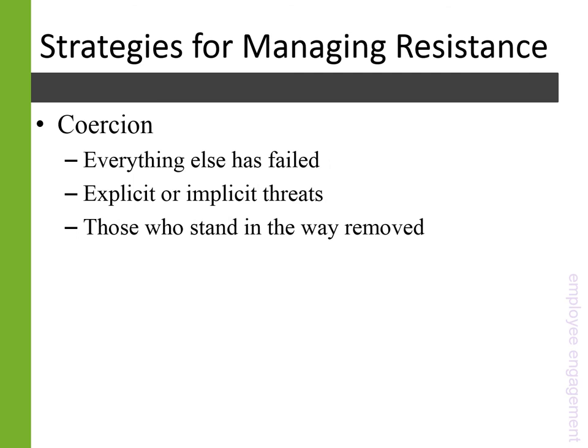The second of the more ethically dubious strategies — and it is worse than manipulation — is coercion, because it involves basically legal blackmail. It's often used when everything else has failed, involving something like mutually assured destruction: either accept the terms of the negotiation or everyone's fired. An inherent part of coercion is either an explicit or implicit threat, and a message that those who stand in the way of the change will be removed. Obviously, this isn't particularly socially responsible, and oftentimes is frankly utterly unethical.